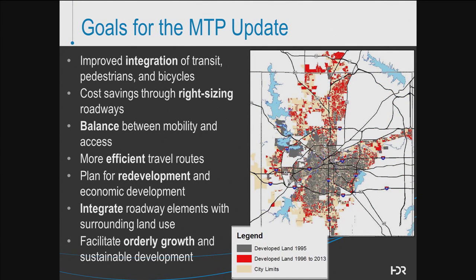From a goals perspective, the MTP should consider improved integration of transit, bicyclists, and pedestrians, the right-sizing of streets relative to the intended land uses of adjacent areas — whether in urban or suburban environments — a better balance of mobility and access, particularly on key or future transit corridors. More efficient routes are needed, with better connectivity to promote more efficient travel and layout of streets. Redevelopment considering a range of land uses and mixed-use environments needs to be addressed, as do large-scale master plan developments in the western, northern, and southwestern sectors. Roadways need the ability to integrate with surrounding land uses to promote more walkable environments.